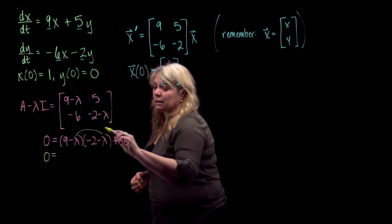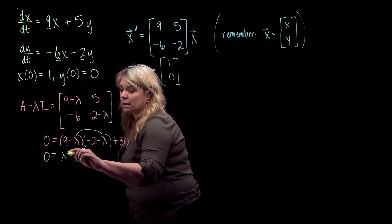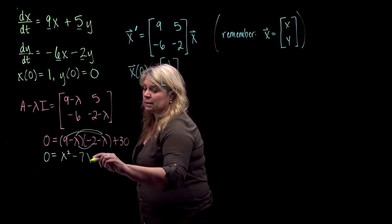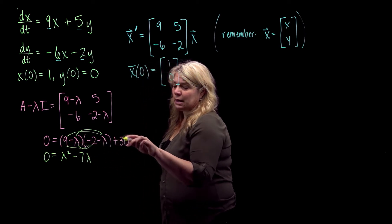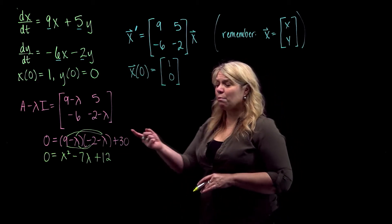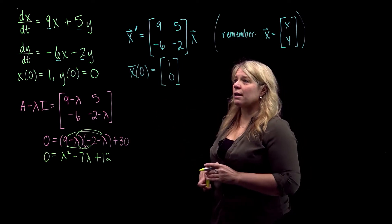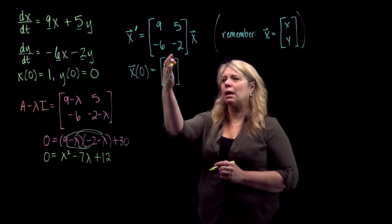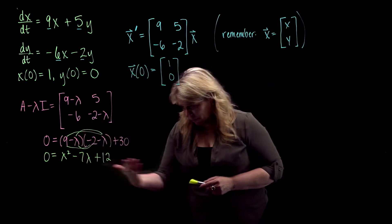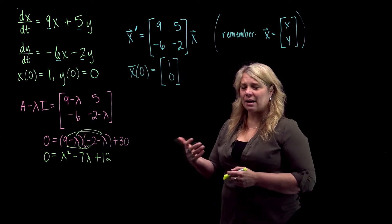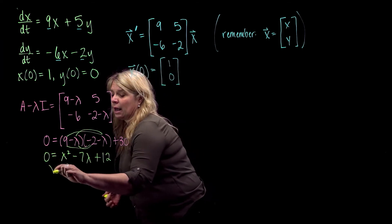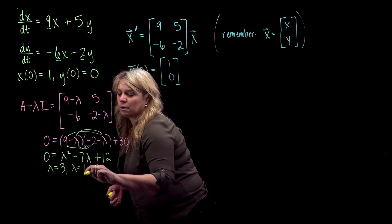I usually do the lambda terms first. Minus lambda times minus lambda is lambda squared, then I have minus 9 lambda and plus 2 lambda, giving minus 7 lambda. The constant term gives minus 18 plus 30, so plus 12. That's basic algebra, but if you mess anything up here, it sends the problem in a crazy direction. Pause and make sure your algebra is correct, then solve the quadratic. This factors as lambda minus 3 times lambda minus 4, giving lambda equals 3 or lambda equals 4.